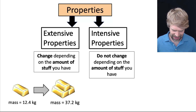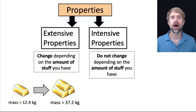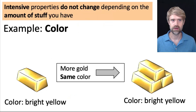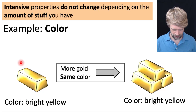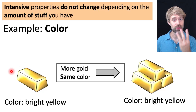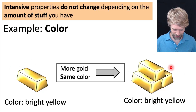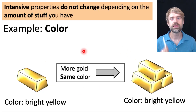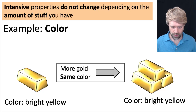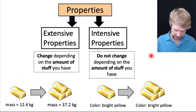On the other hand, an intensive property does not change depending on the amount of stuff you have. A great example of that is color. One gold bar is bright yellow; three gold bars, also bright yellow. More gold, same color. Color doesn't change when you have more gold, which means that it is an intensive property.